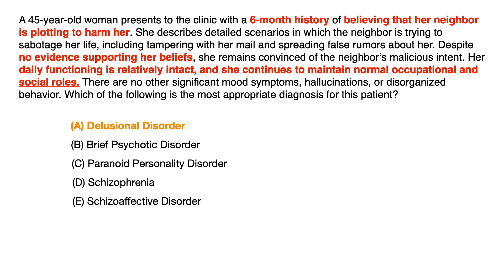The criteria in DSM-5 has changed, so delusional disorder no longer requires only non-bizarre delusions. But when taking your exam on USMLE or COMLEX, the test writer will likely use non-bizarre delusions to write a fair, unambiguous question. So if you see a stem where a person believes a neighbor is plotting against them — that could perceivably happen — that's a non-bizarre delusion.